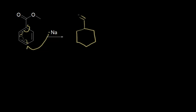So once again, we have our ester group up here. We added an electron to this carbon from the sodium, and we got another electron from that bond, which gives this carbon a negative one formal charge. Over here we formed a pi bond — there was already a pi bond over here — and we get one electron on that carbon. So this is our radical anion.